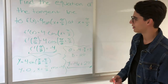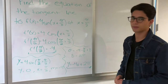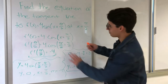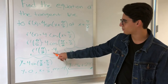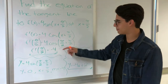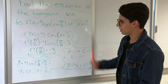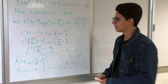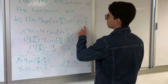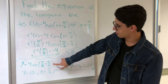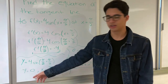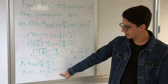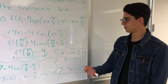We substitute x into the derivative. Substituting gives 4 cos, and the result is minus 4. That minus 4 is your slope, which is your m. So we already have x and m, and we just need to find y. We substitute into the original equation, which gives y equals 0. So y is 0, x is π/2, and m is minus 4.